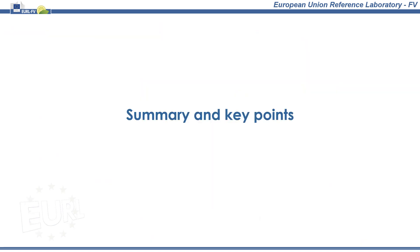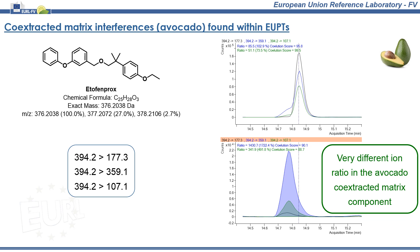Until now, we have discussed several issues associated with false positives, false negatives, and also compounds with mass transitions in common. Let's review everything we have covered up until now. First, the case of co-extracted matrix interferences found in the avocado EUPT that interfere in the analysis of etofenprox. Remember that all three monitored mass transitions are affected in this case, from precursor ion 394.2 to fragment ions 177.3, 359.1, and 107.1. Fortunately, the ion ratios for the co-extracted matrix interferences are widely different to those of the etofenprox standard, so false positive reporting should not happen.